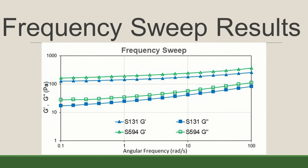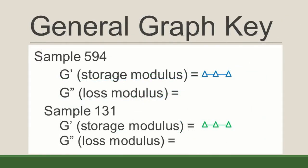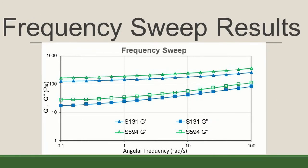Also, from the frequency sweep, we get a graph of G' plotted against angular frequency. For this graph, the green and blue triangles will mark G', which is the storage modulus, and the green and blue squares will mark G'', which is the loss modulus. This shows that G', or storage modulus, which indicates the elastic or solid-like behavior, is higher than G'', or the loss modulus, which indicates viscous or fluid-like behavior. From this, we can gather that both samples have a higher storage modulus, meaning that they are elastic or solid-dominant, while sample 594 has a higher storage modulus than sample 131, meaning it has more elastic dominance.